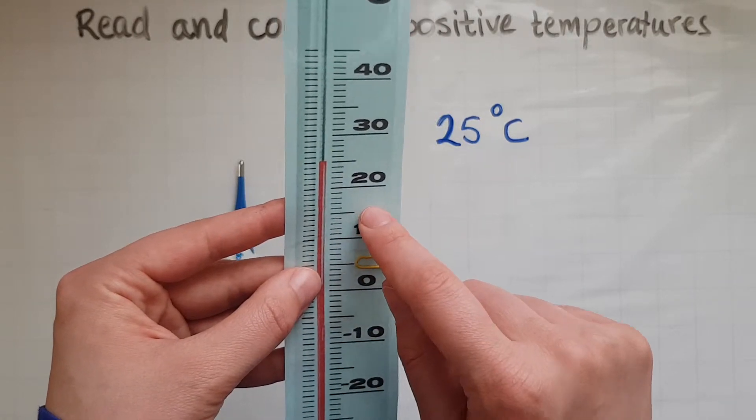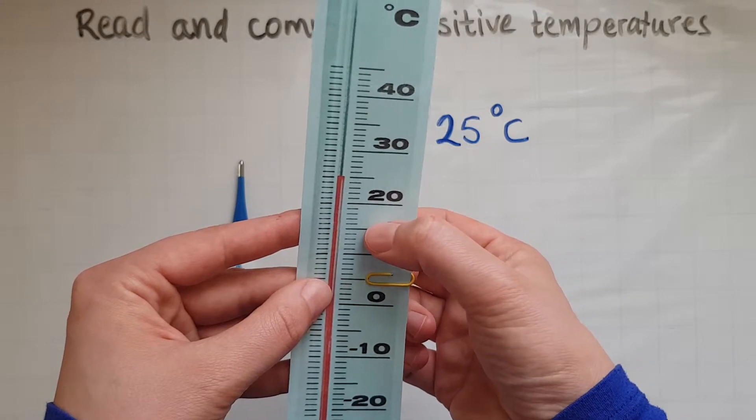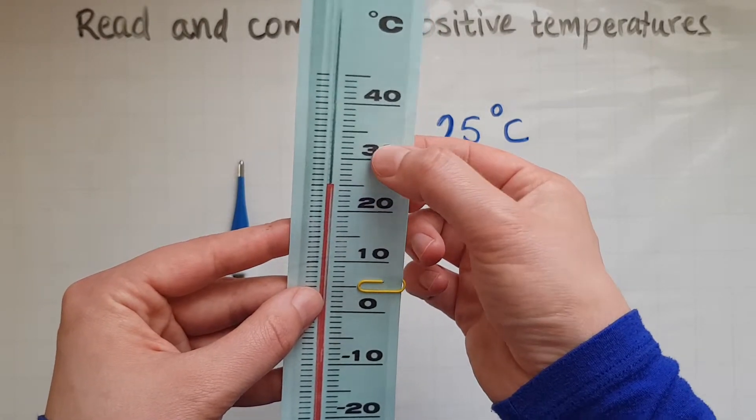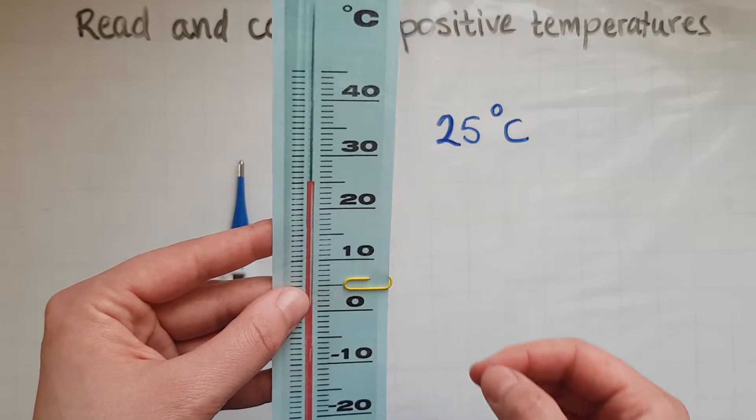So this is between 10 and 20, that's 15. Between 20 and 30, 25. Between 30 and 40 is 35 degrees Celsius.